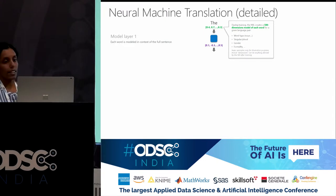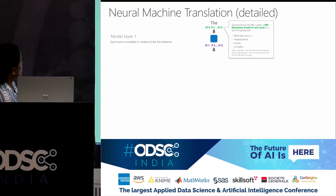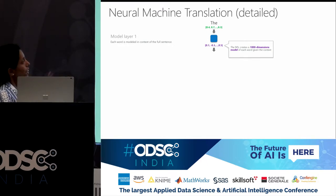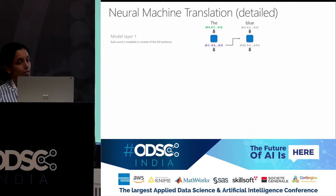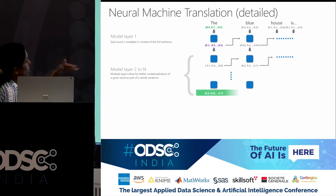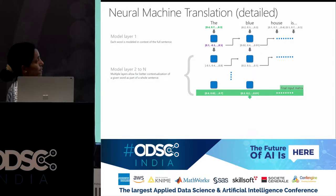Let's say we have an English sentence we want to translate into French or Italian or any language. The first layer models each word in context. Assume that in this step a neural net creates a 500-dimensional vector for each word, and then creates a 1000-dimensional vector to also capture the context of the word. This gets done for each word in the sentence. Then you repeat this process — it's not just one encoder and one decoder, it's nested — so you have many layers to get context in a much better fashion, and you come up with this final input matrix.